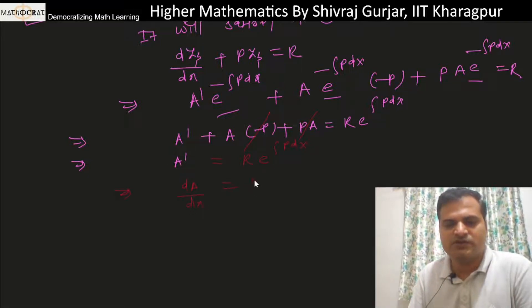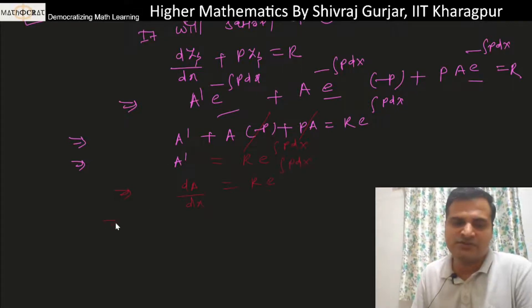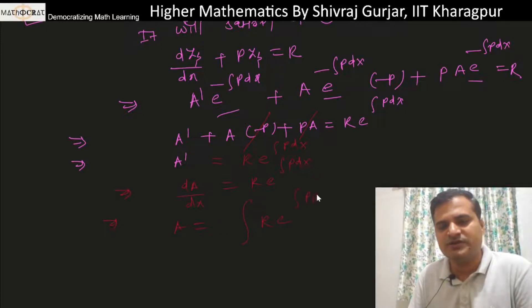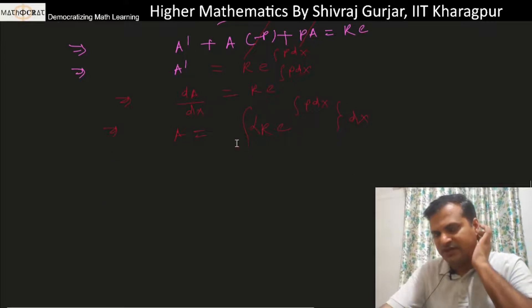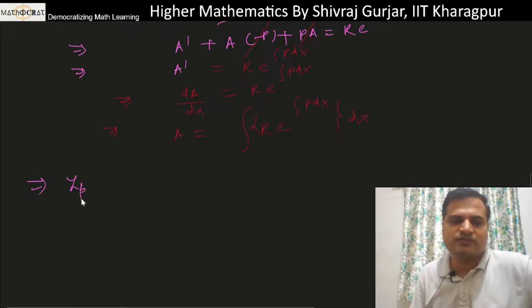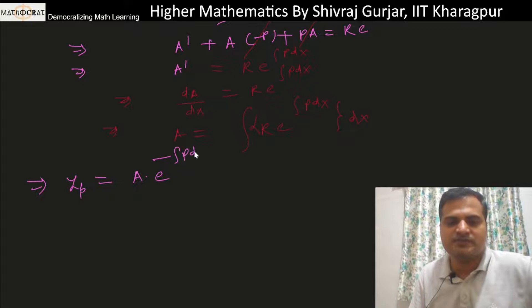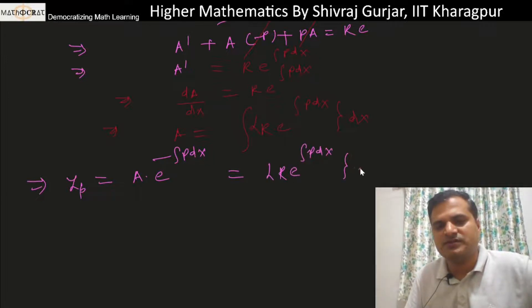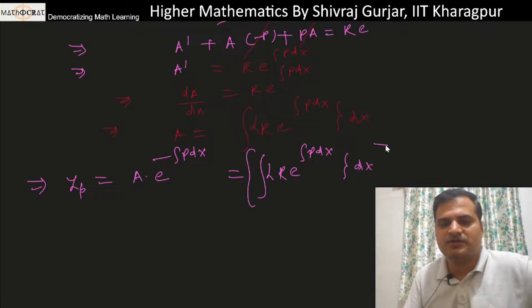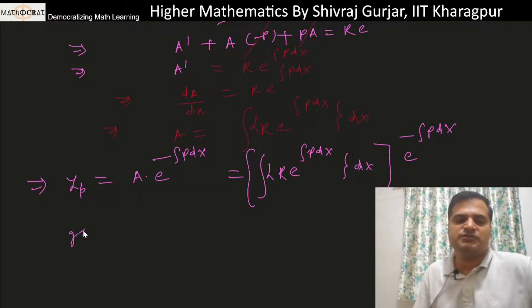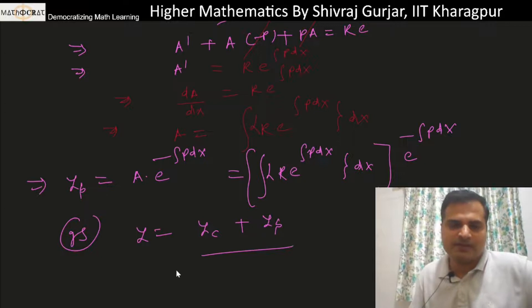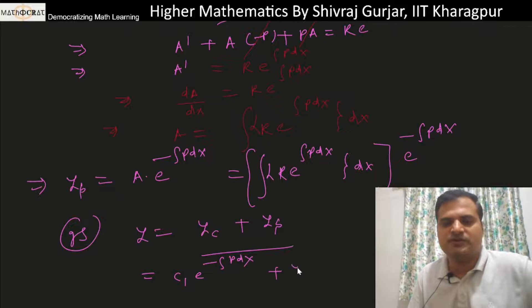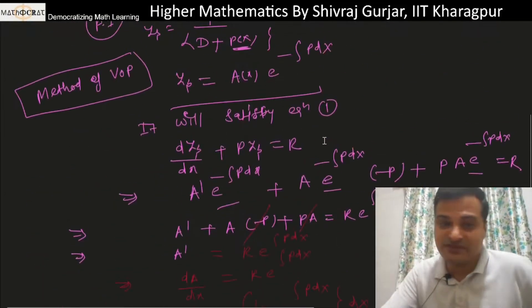So da/dx = R · e^(∫P dx), which gives a = ∫R · e^(∫P dx) dx. The particular integral is then y_p = a · e^(−∫P dx). The general solution is y = c₁·e^(−∫P dx) + e^(−∫P dx)·∫R·e^(∫P dx) dx.